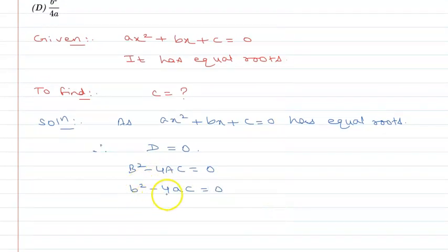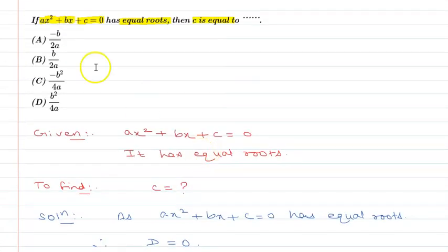To find the value of c, we set b² - 4ac = 0. So from this, b² = 4ac.